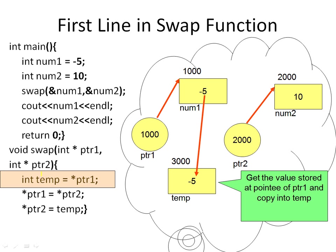Then in this step, I have temp, and inside temp I copy the value of the pointee of ptr1. As I have said in previous videos, the meaning of the asterisk in front of the pointer is: read the address inside the pointer, follow the pointer to that address, and get the value stored there. The assignment operator then takes that value and stores it inside temp — so we get the value stored at the pointee of ptr1 and copy it into temp.